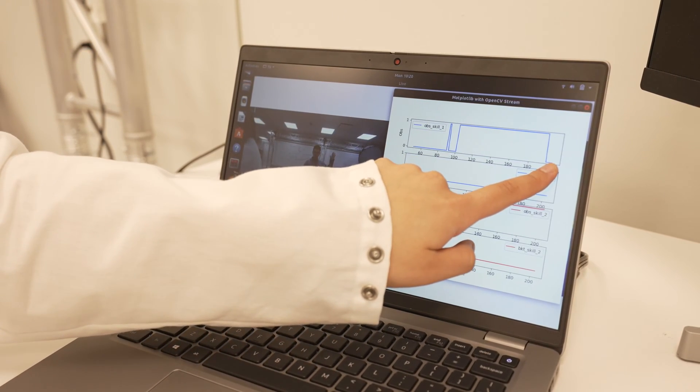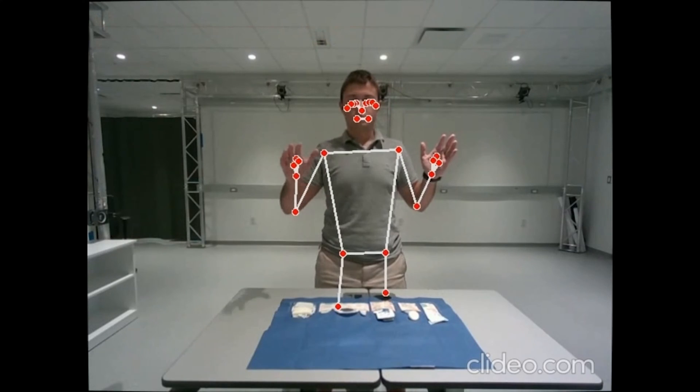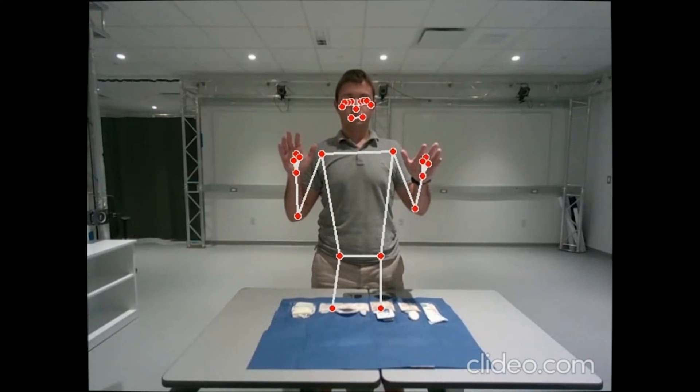Another rule is that they always have to keep their eyes on the sterile field. If they reach across the sterile field, that's also considered contaminated.